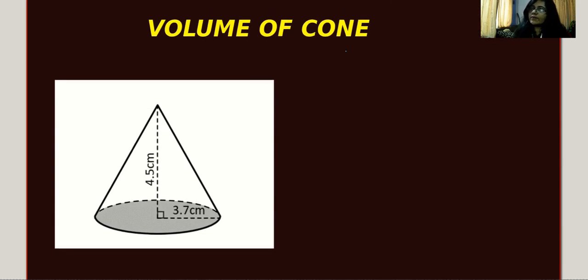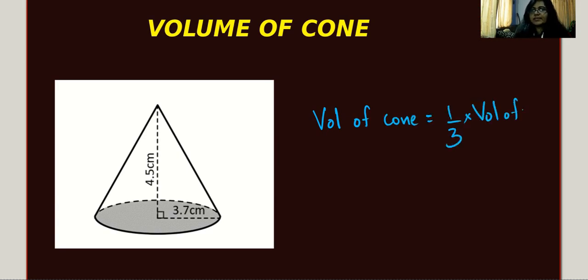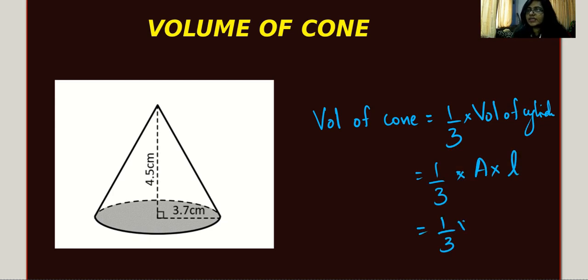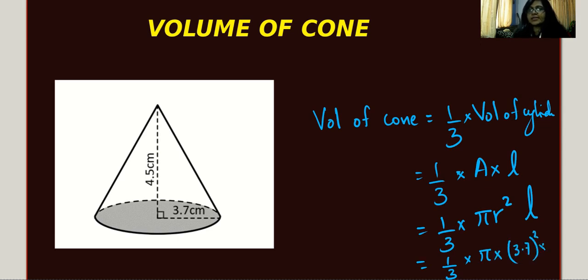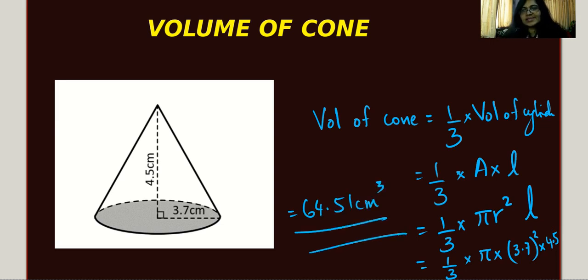For finding the volume of a cone, it's one third the volume of the cylinder — so one third times π times r² times height. Here, r equals 3.7 and height equals 4.5. So one third times π times 3.7 squared times 4.5 gives 64.51 cm³. Friends, if you got all these answers right, please comment below, give a thumbs up, like, share and subscribe to our channel. We'll meet again — bye!